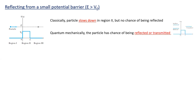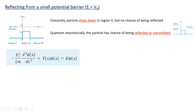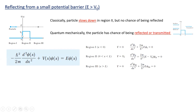So how does this work? There is a chance for this incident particle to be reflected or transmitted. We start off with the time-independent Schrödinger equation, and this time we have to break it into three regions because the situation is different in all three regions. In region one, where x is less than zero, V equals zero, so we get the same equation we got for the infinite square well. However, in region two, V is not equal to zero — V equals V-naught.